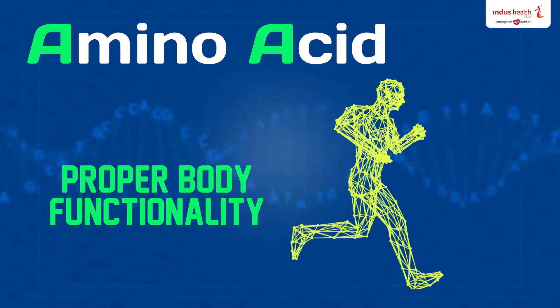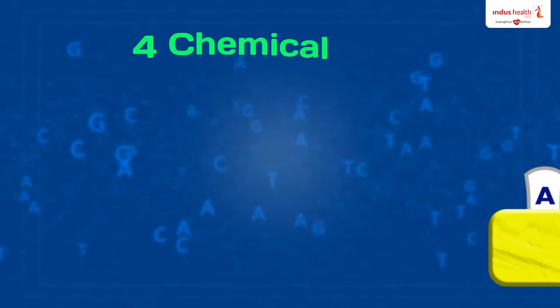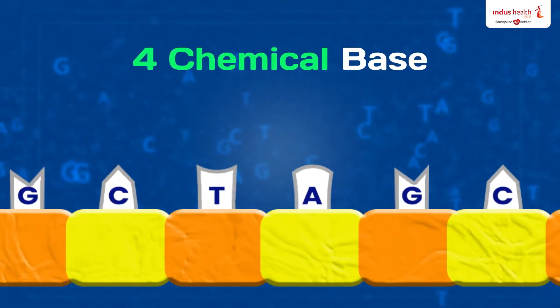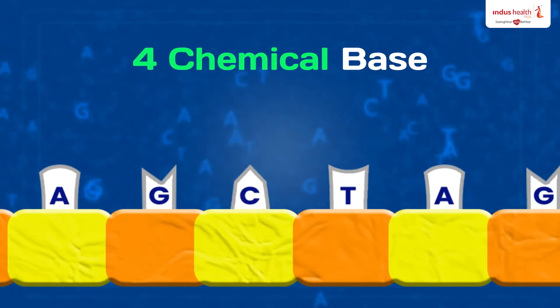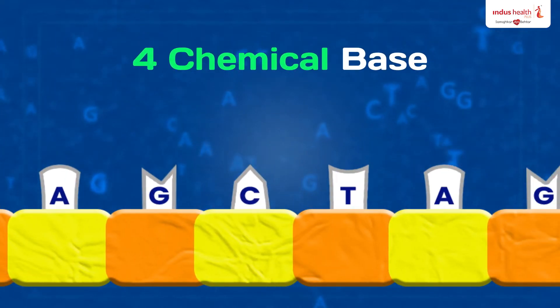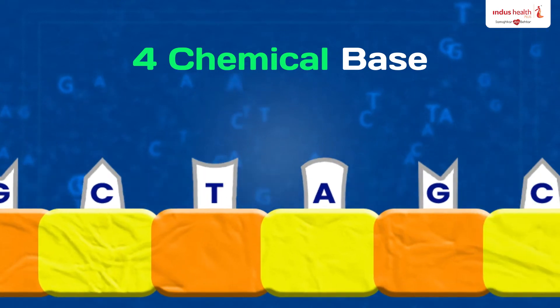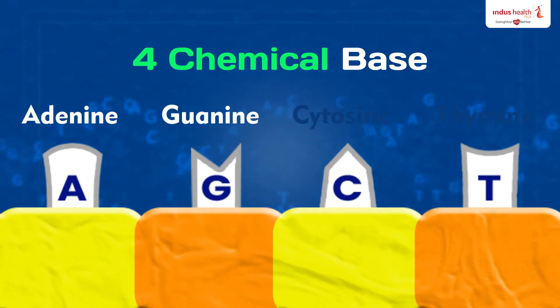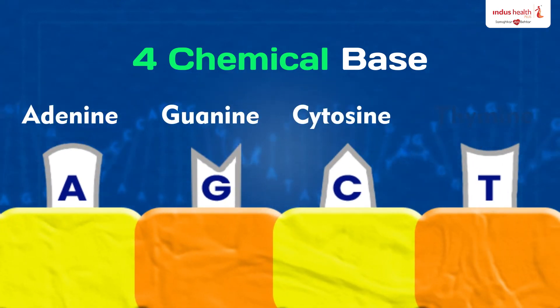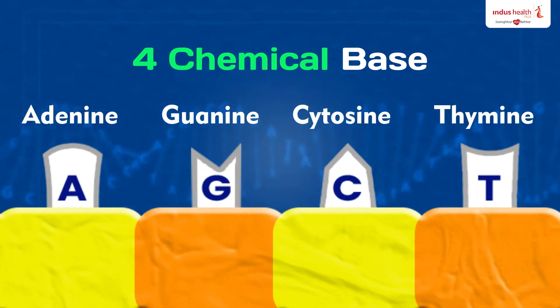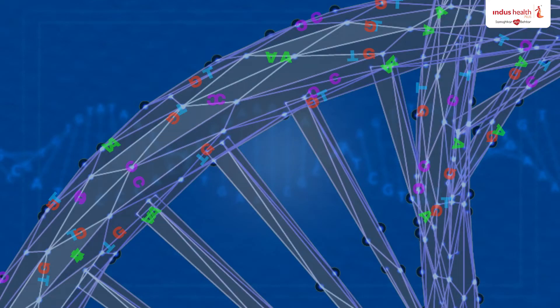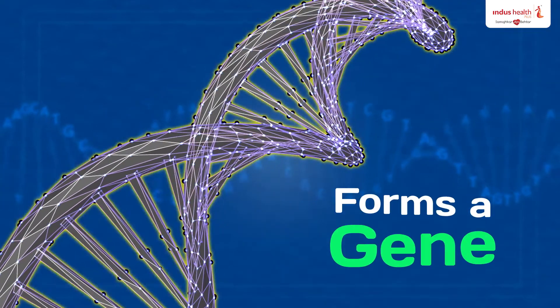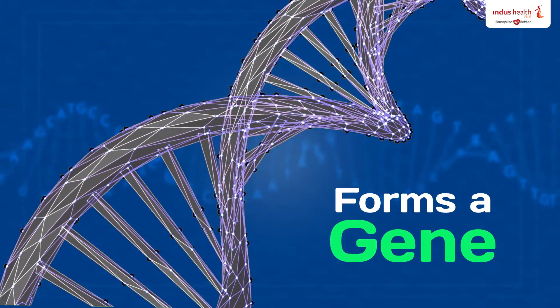So how does it work? The information in DNA is stored as a code made up of four chemical bases: adenine, guanine, cytosine, and thymine. A combination of these letters forms a gene.